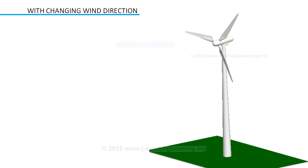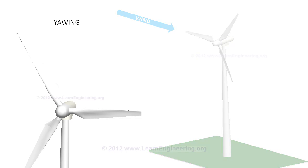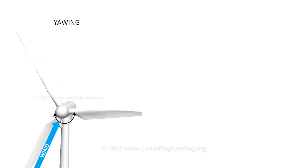The direction of wind can change at any time. So a yawing mechanism in the turbine makes sure that the turbine is always in the direction of wind, thus assuring maximum power extraction.